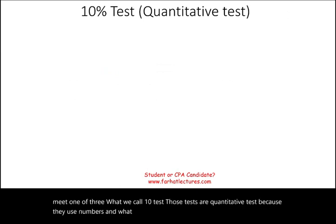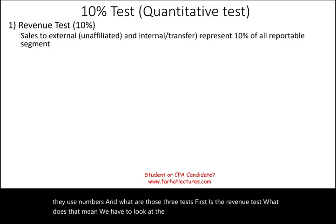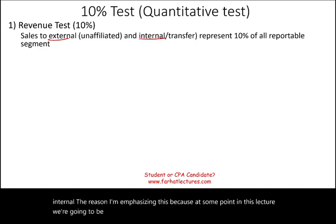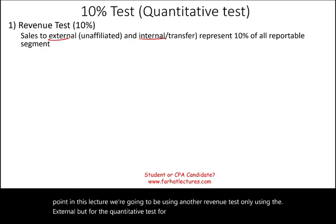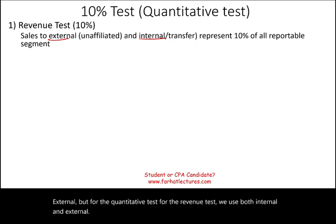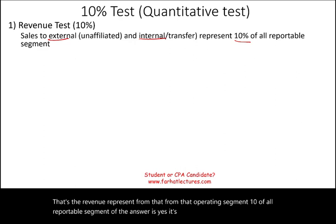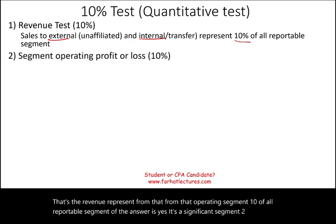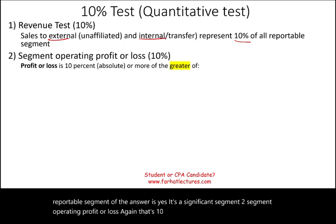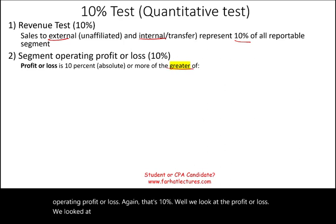We focus on three 10% tests — we only have to meet one of three. These are quantitative tests because they use numbers. The three tests are: first, the revenue test; second, segment operating profit or loss; and third, the asset test. For the revenue test, we look at sales to both external and internal customers — both count for this quantitative test. Does the revenue from that operating segment represent 10% of all reportable segment revenue? If yes, it's a significant segment.